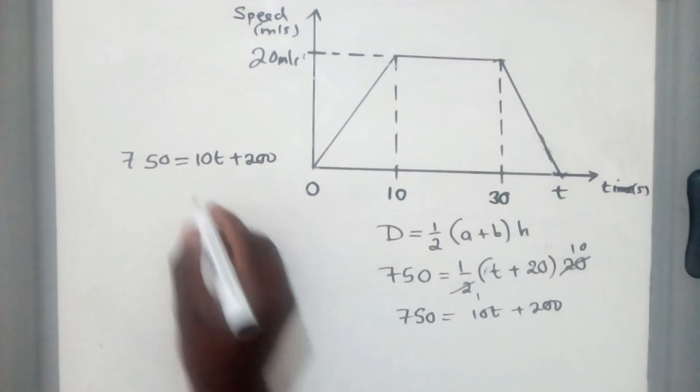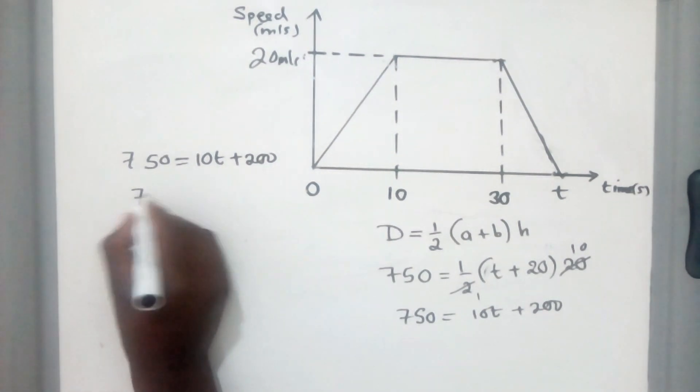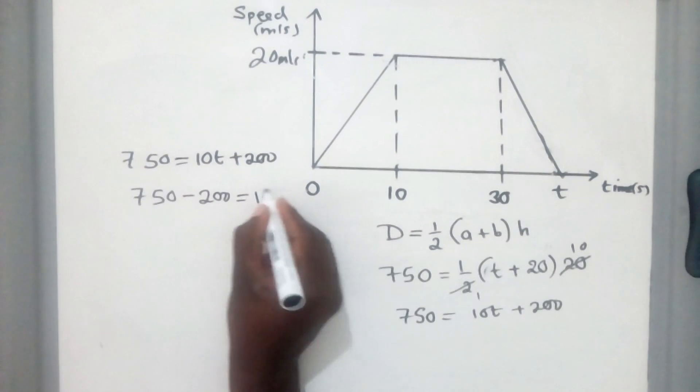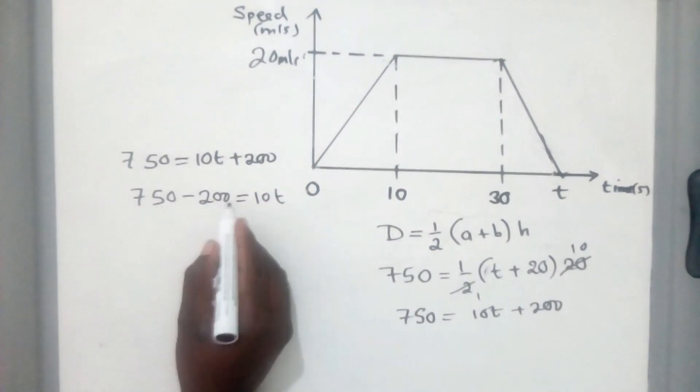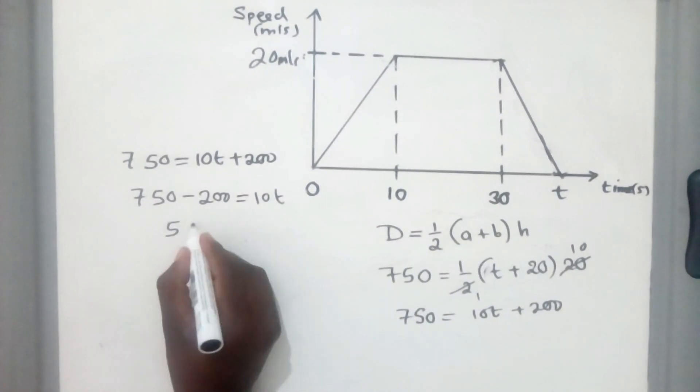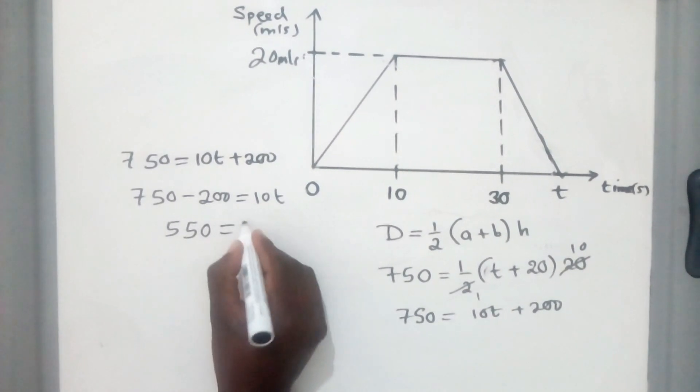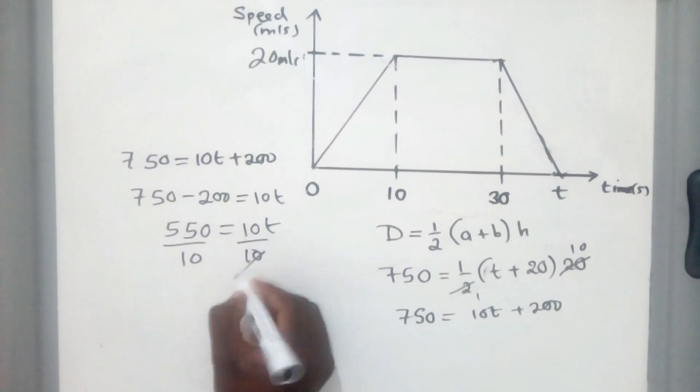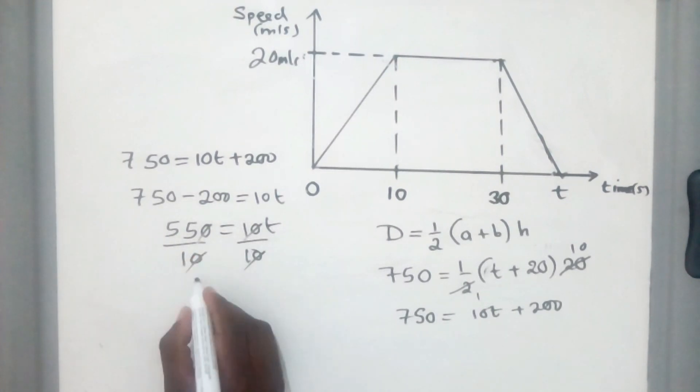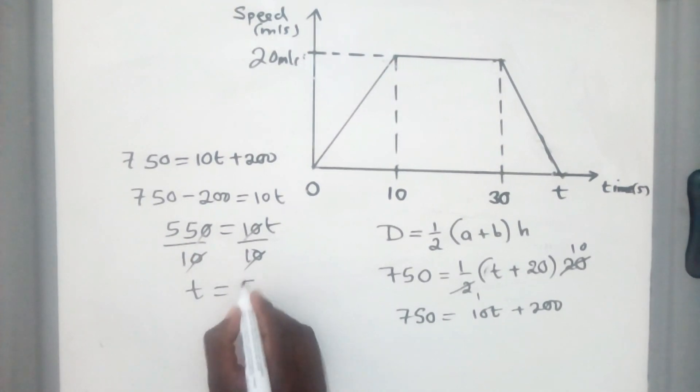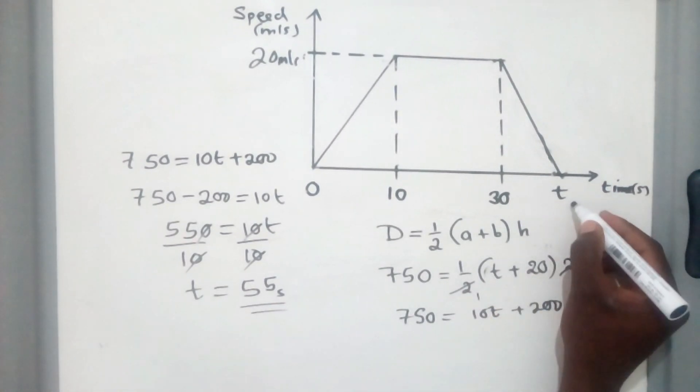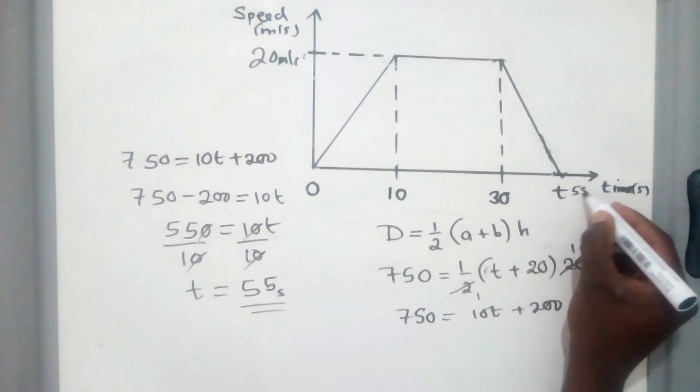So from this stage, we can group the like terms. So 750 minus 200 is equal to 10t. So here, it will give us 550, which is equal to 10t. To solve for t, we divide by 10, divide by 10 both sides. So we find that our t will be equal to 55 seconds. This is our t. So here it's 55, 55 seconds.